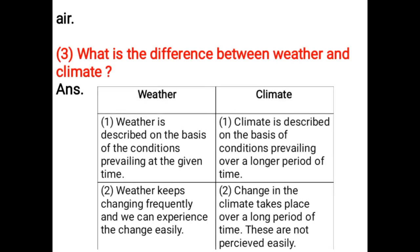What is the difference between weather and climate? Weather is described on the basis of conditions prevailing at a given time. Climate is described on the basis of conditions prevailing over a longer period of time. Weather keeps changing frequently and we can experience the change easily, whereas change in climate takes place over a long period of time.